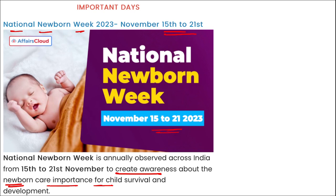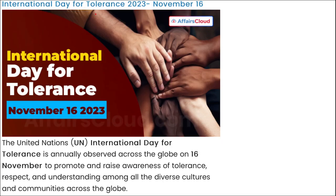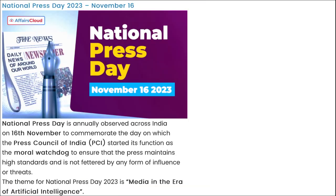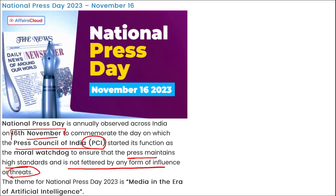National Newborn Week is observed from 15th to 21st November. International Day for Tolerance is observed on 16th November to promote awareness of tolerance, respect, and understanding among all diverse cultures and communities globally. This day was first observed in 1997. National Press Day is observed on 16th November to commemorate the day the Press Council of India started functioning in 1966 as a moral watchdog to ensure high press standards. The theme for National Press Day is 'Media in the Era of Artificial Intelligence.'